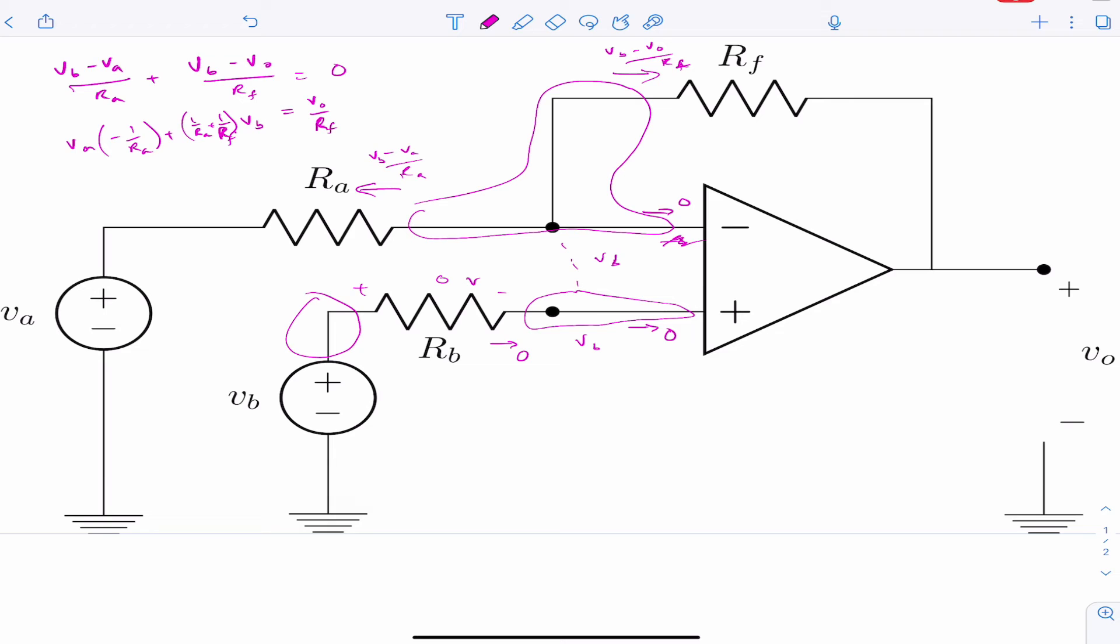Now, multiply both sides by Rf, and we have... And so now we have this relationship. And we might write it a little bit more clearly.